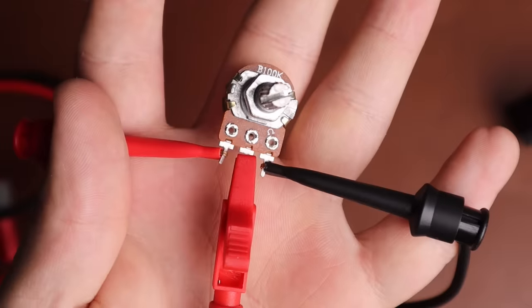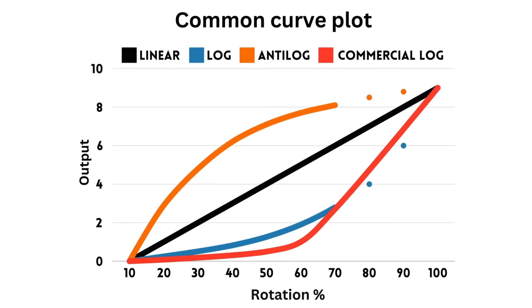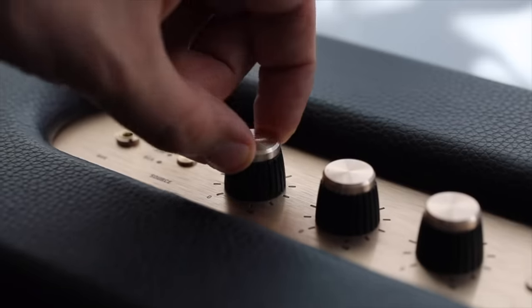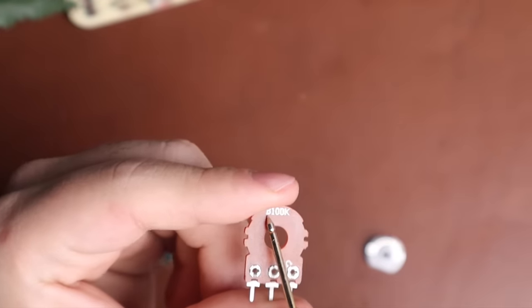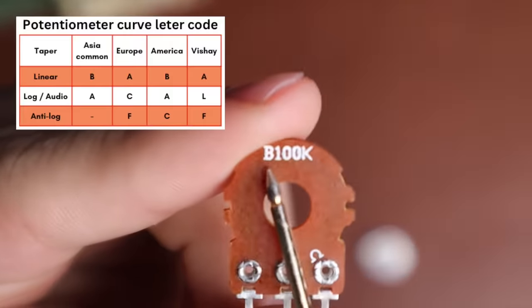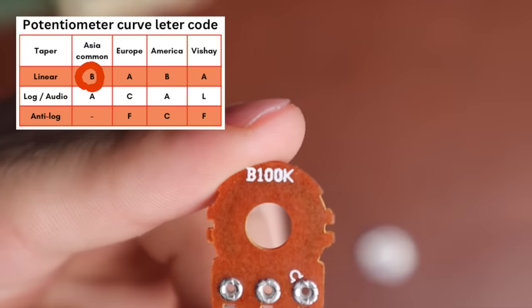This allows us to make a voltage divider by grounding the terminal at the end. The resistive material on these devices can be linear or logarithmic. This just means that the resistance can change across the strip and not be the same linearly, which is useful for audio controls and other applications. Potentiometers will have a letter on them indicating the type of curve they are. In this case, we have B, which is simply a linear potentiometer.